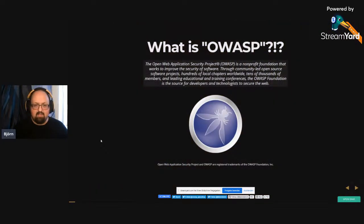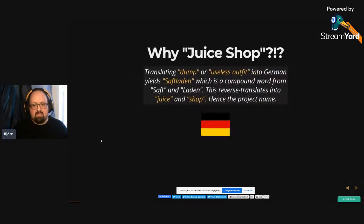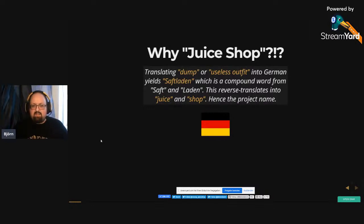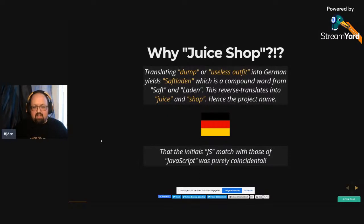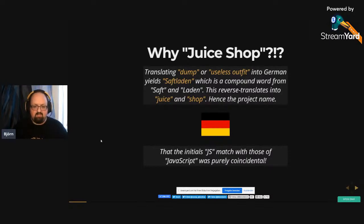We can skip the 'what is OWASP' part since we're in an OWASP meetup. What we shouldn't skip is why this project is actually called Juice Shop. That came from an actual German word, 'Saft laden,' which is a really terrible store — a place where you get a really bad shopping or service experience. In German, 'Saft' and 'laden' translate to 'juice' and 'shop' in English. The initials JS also matching JavaScript was a pure coincidence, which later led to the creation of the leaking juice box logo that looks like the JavaScript logo.